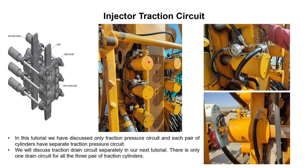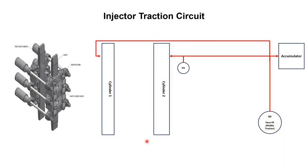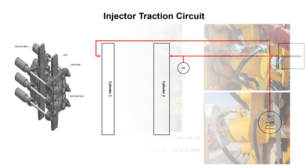To make clear the pressure circuit: it starts from the quick disconnect, then goes to the accumulator. From the accumulator, the flow is divided into two parts — one hose goes to one cylinder and the other hose goes to the other cylinder — and we have a pressure gauge. That was a detailed discussion about the injector traction circuit. I am hopeful that you got a good understanding of what we discussed. Thank you very much. See you in the next tutorial.